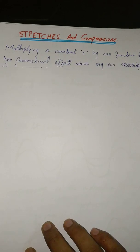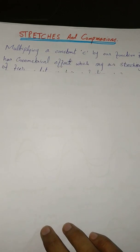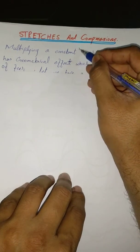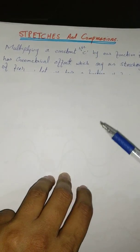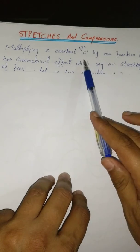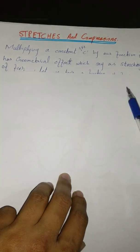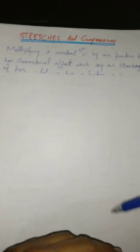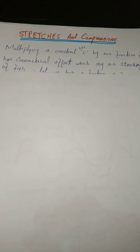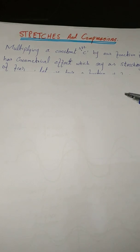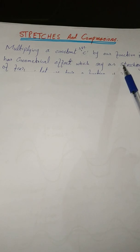We just start the lecture. When we multiply a positive constant C by our function f(x), it has geometric effects. Whenever we multiply our constant by our function f(x), there are some geometric effects on our graph, which we refer to as stretching.